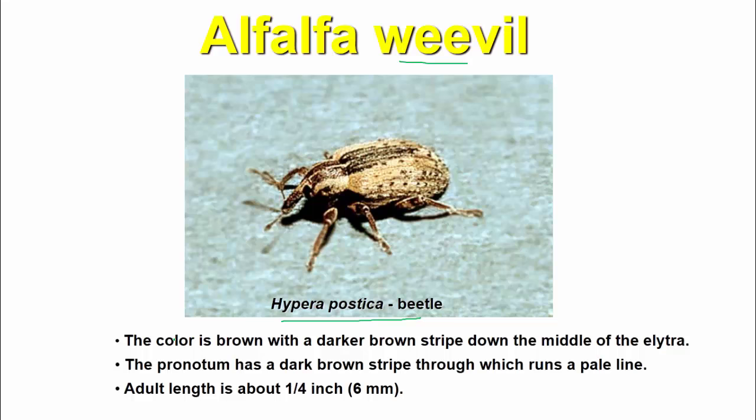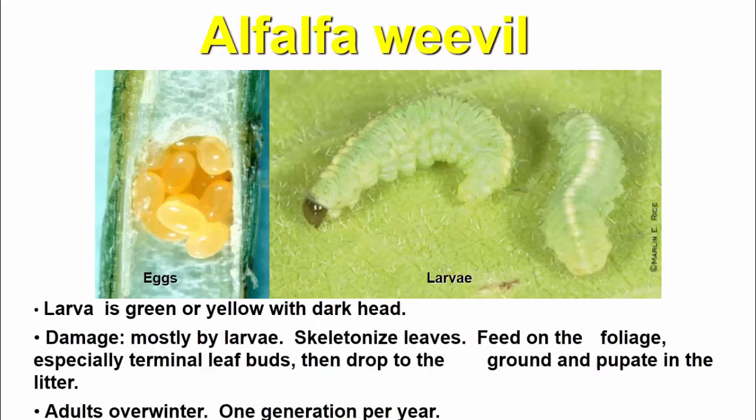The alfalfa weevil is brown with a darker brown stripe down the middle of the elytra. The pronotum has a dark brown stripe through which runs a pale line. Adult length is 1/4 inch (6 mm). The larva is green and yellow with a dark head. Damage is caused mostly by the larva.